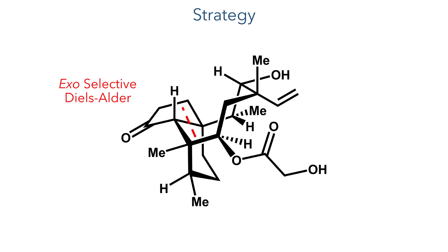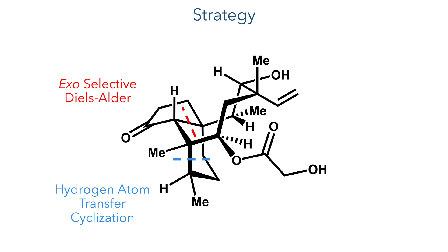The strategy to construct this molecule would be to use an exoselective Diels-Alder reaction to construct the first fused ring system, a hydrogen atom transfer cyclisation to construct the six-membered ring, and a photodecarboxylation fragmentation reaction to expand the central ring and create the target cyclooctane.